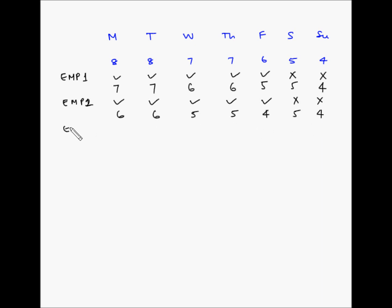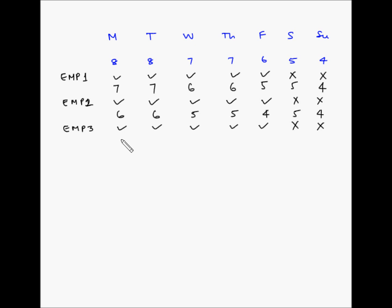For employee number 3, we give Saturday and Sunday off, and he works on the remaining days. The net requirements now become: Monday 6-1=5, Tuesday 6-1=5, Wednesday 5-1=4, Thursday 5-1=4, Friday 4-1=3, Saturday 5, Sunday 4.